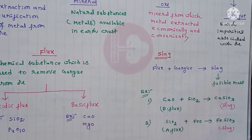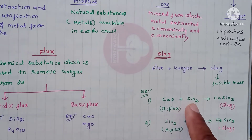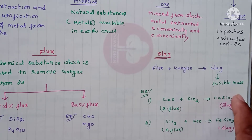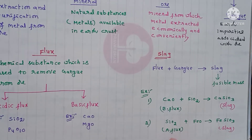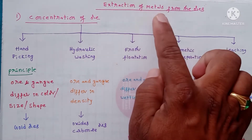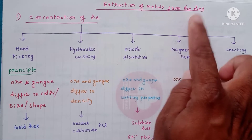The properties of slag are: it is fusible, it floats on the surface of the liquid metal, and it can be easily removed with paddles. For example, calcium oxide is a basic flux which interacts with acidic gangue impurities and forms calcium silicate — this is the slag. Similarly, SiO₂ is an acidic flux which interacts with basic gangue impurities and forms iron silicate, also called slag.